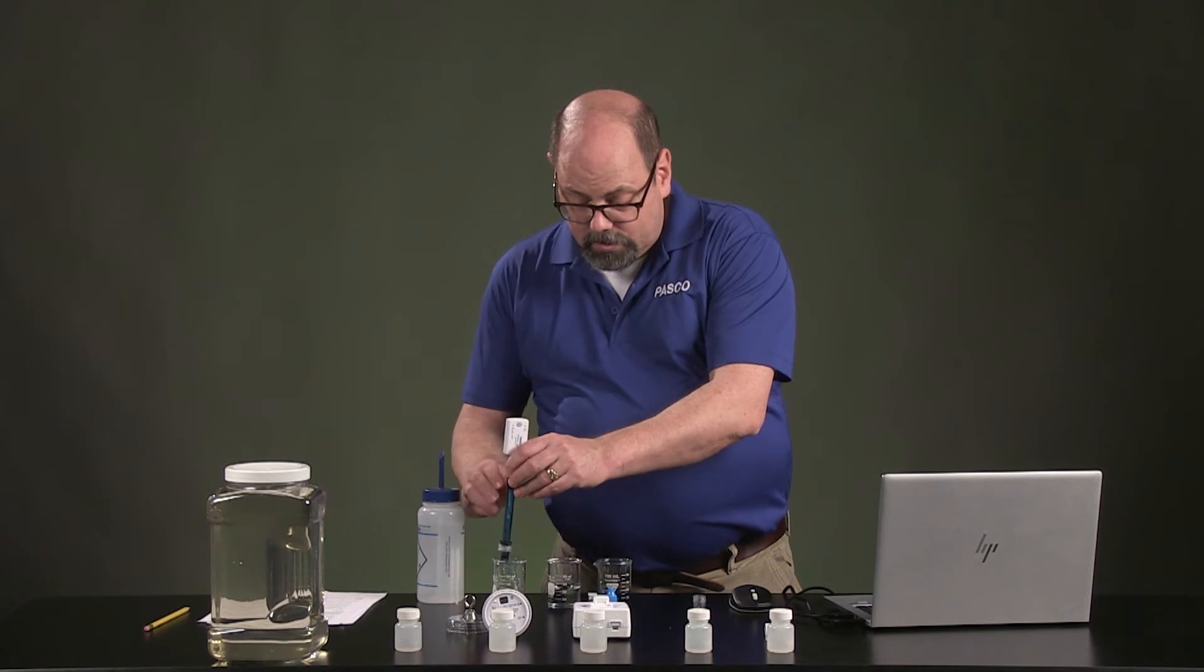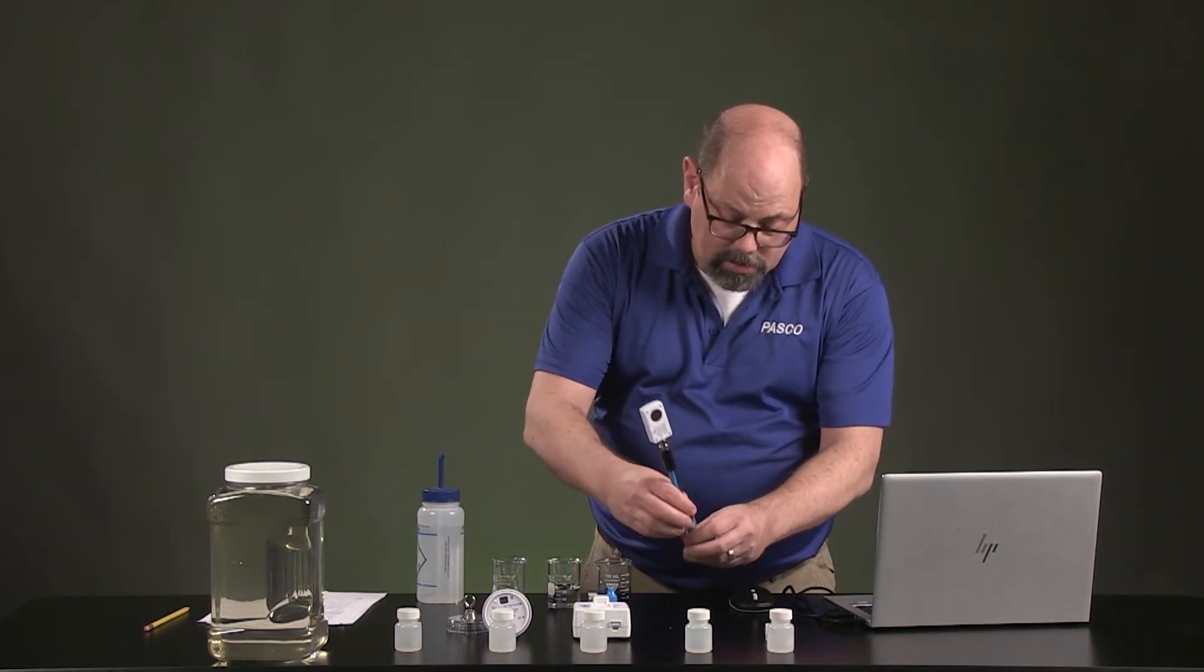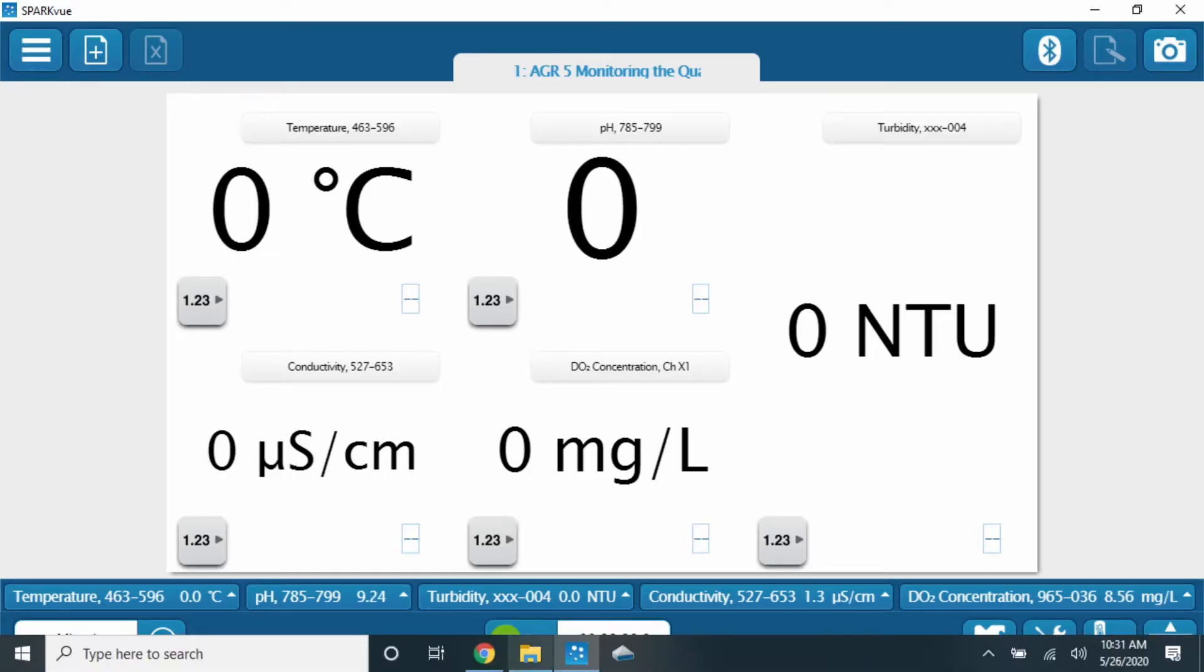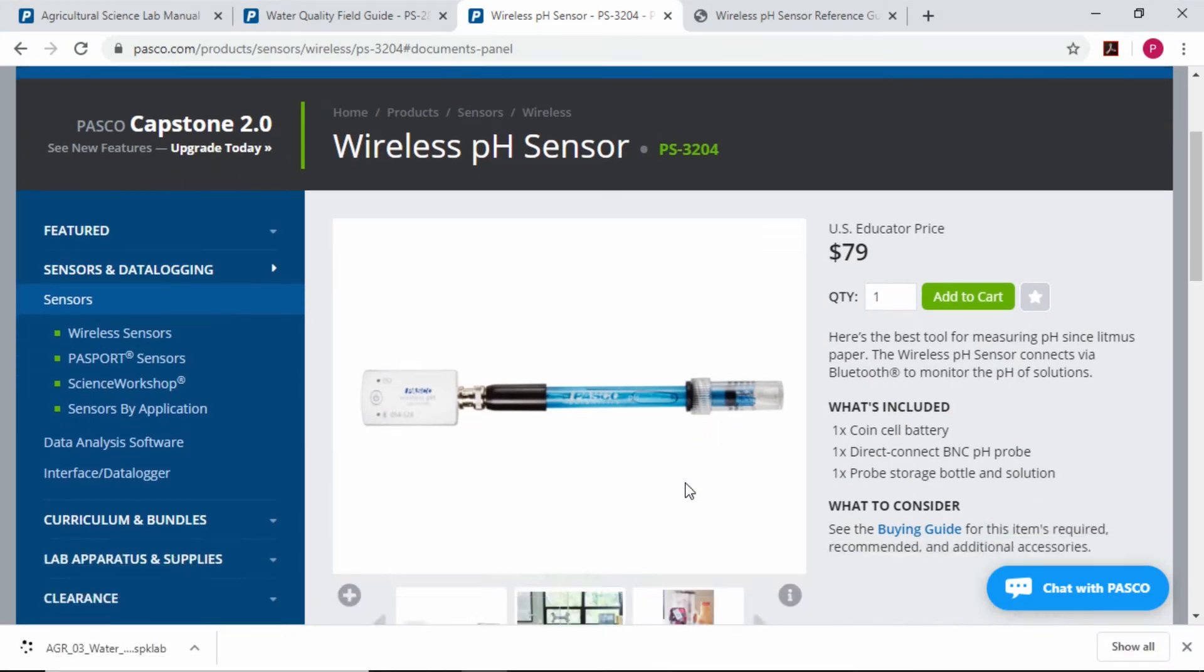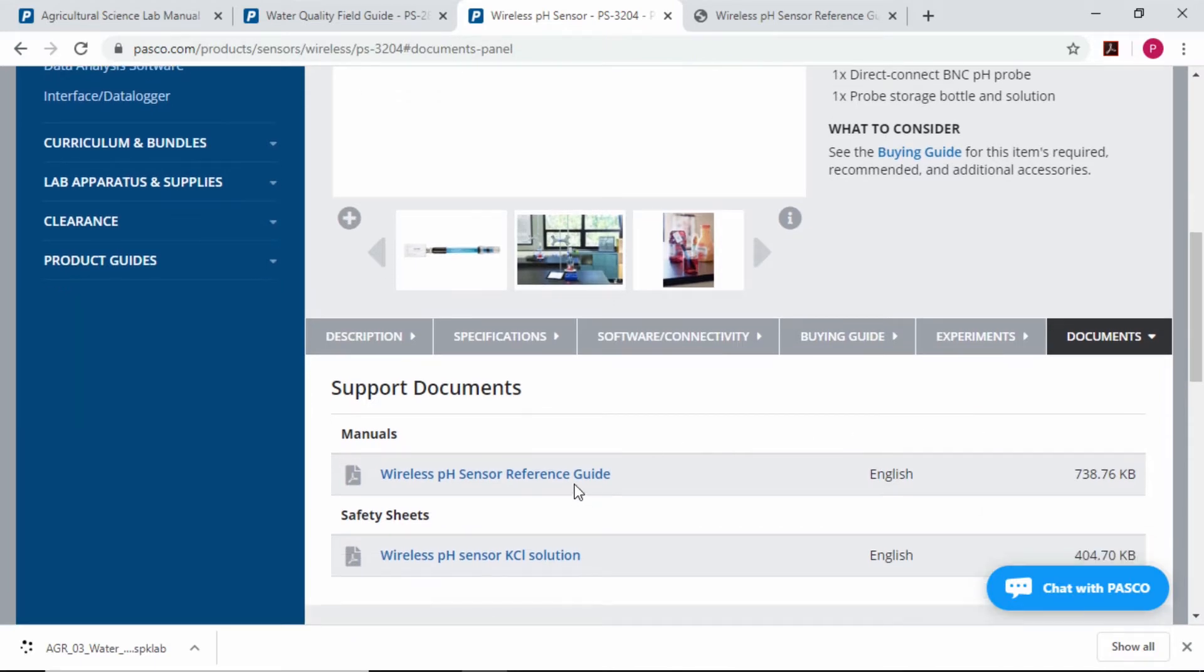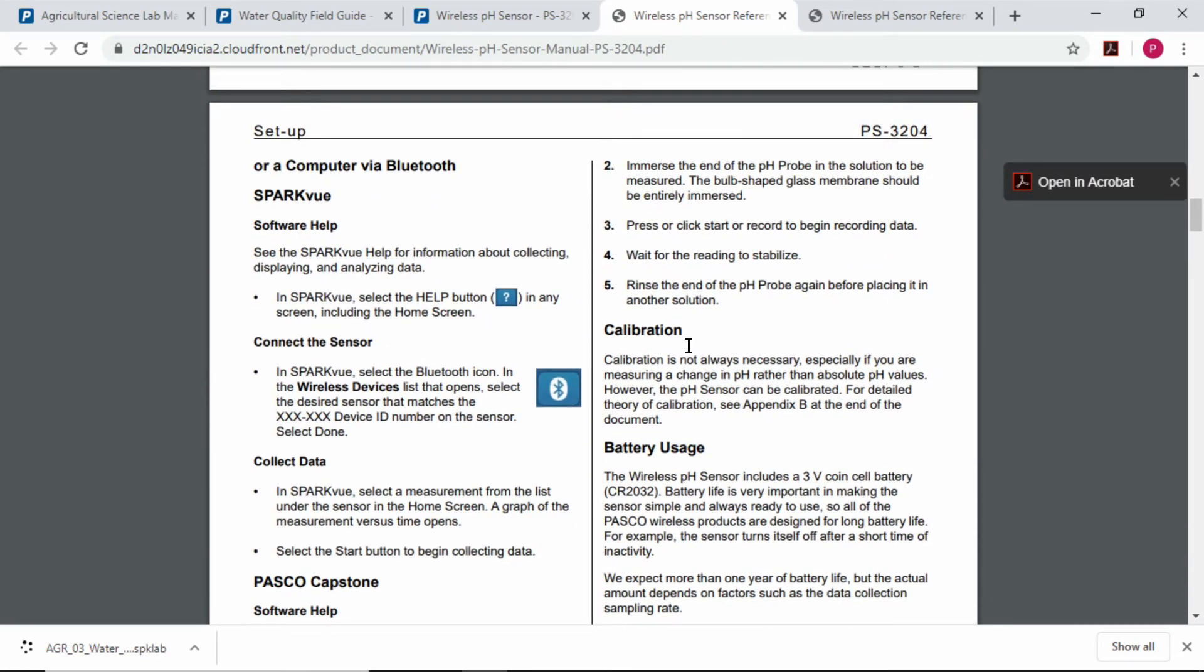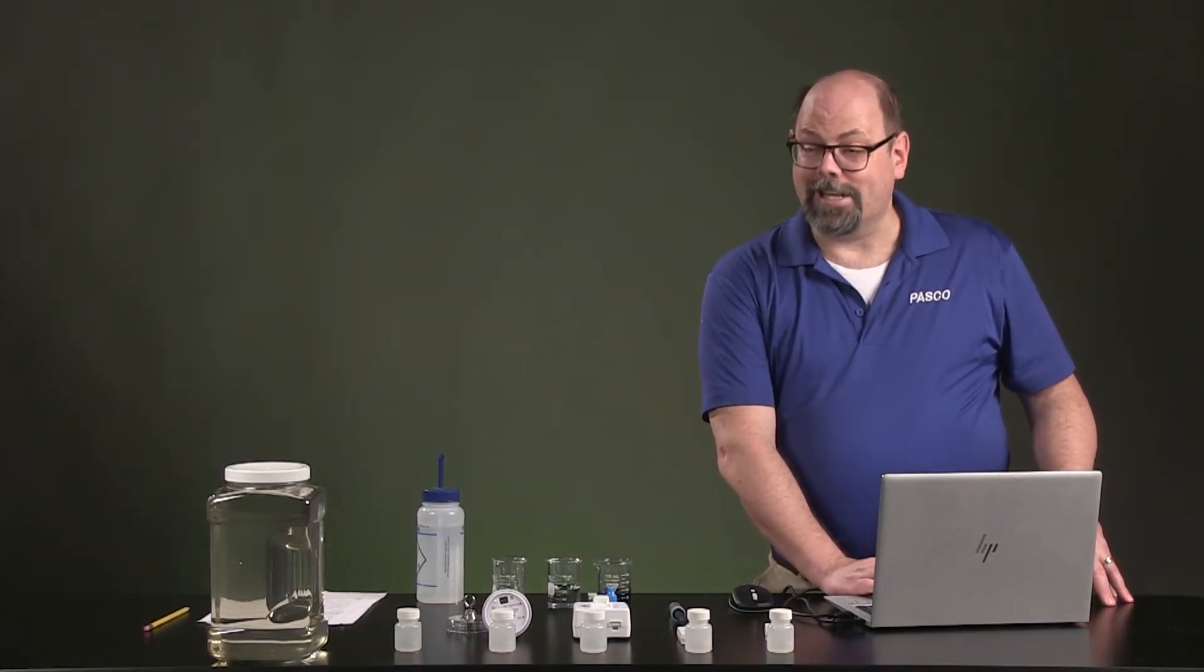Now, any of these instruments, if you are looking to see where the calibration process is, you can go to the website. If you are looking at the product page, like for instance this pH sensor, you can go down into the documents tab here and you're going to see a wireless reference guide. That will open up and talk about the calibration section. That's where you can find calibration information for all of our probes. So with that, we're going to be on to testing.